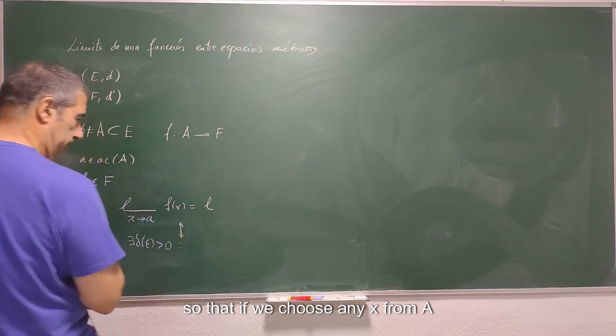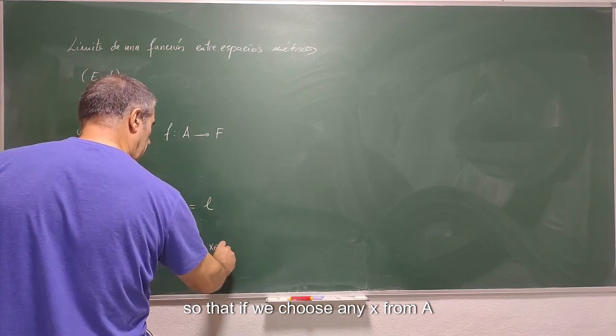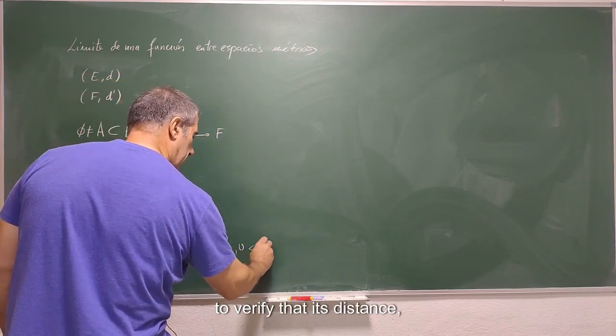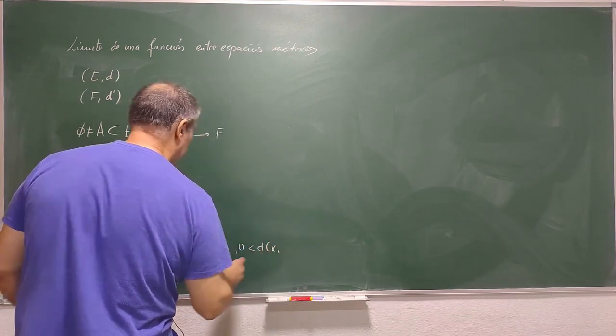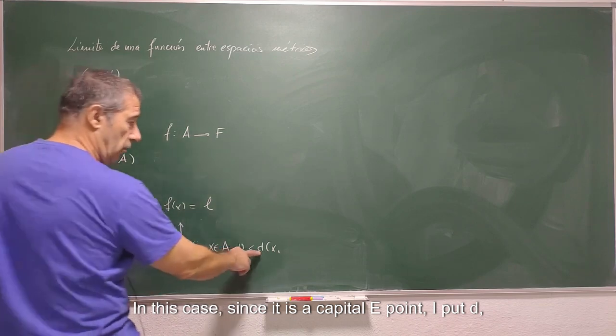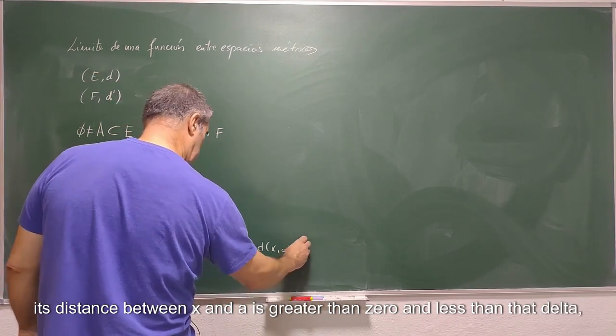So that if we choose any x from A to verify that its distance, in this case since it is a capital E point I put D, its distance between x and a is greater than 0 and less than that delta.